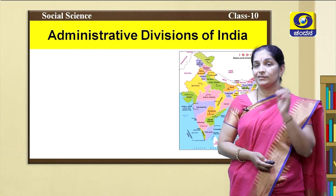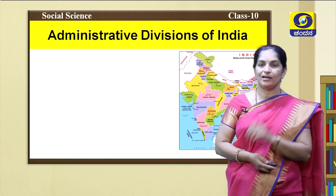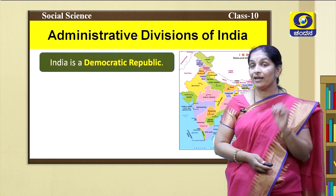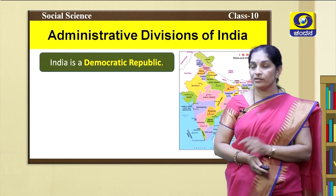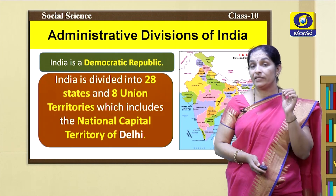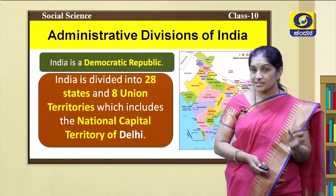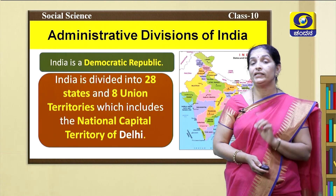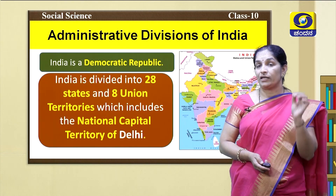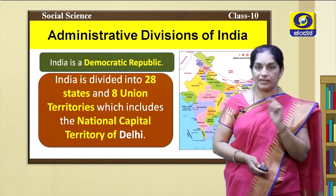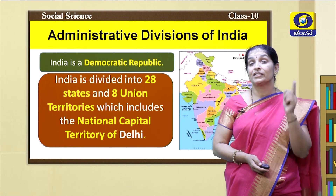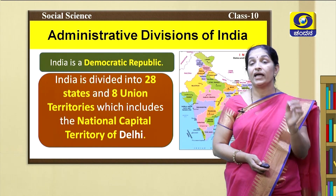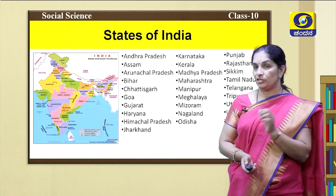Children, let us know about the administrative division of India. India is a democratic republic and has a federal system. India is divided into 28 states and 8 union territories, which includes the national capital territory of Delhi. At present, India has 28 states and 8 union territories, and Delhi is the national capital territory.